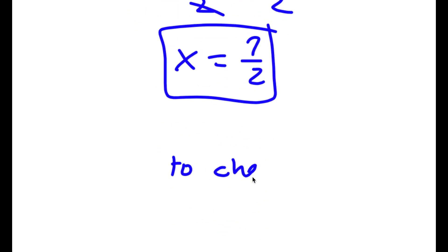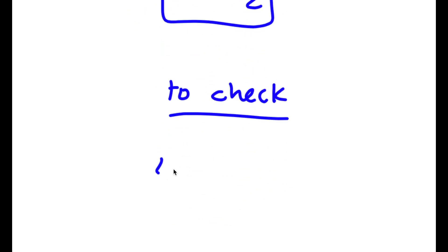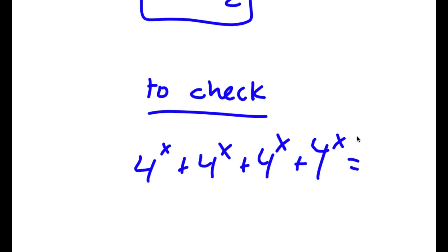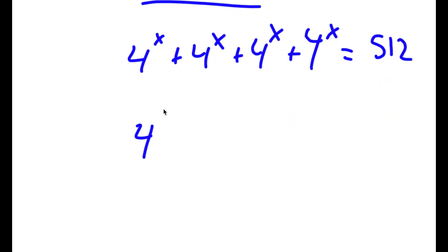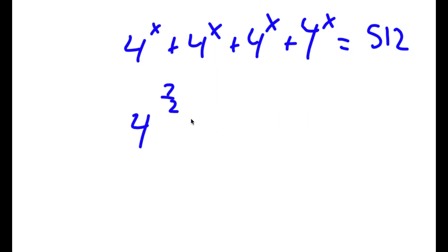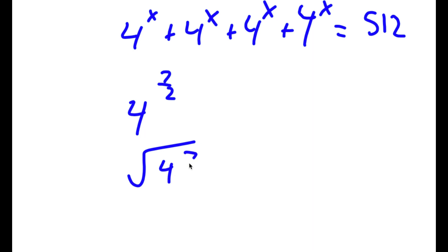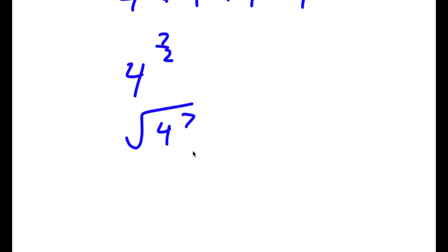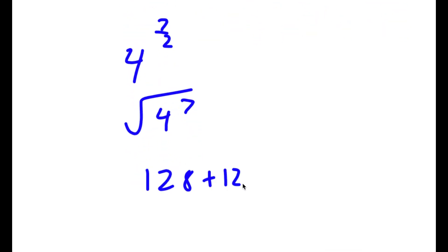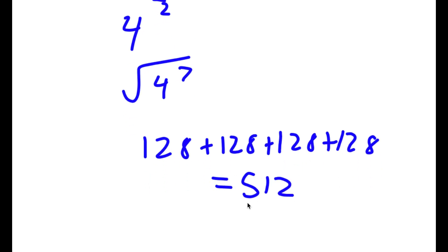To check: 4 to the power of x plus 4 to the power of x plus 4 to the power of x plus 4 to the power of x equals 512. So 4 to the power of 7 over 2 is the square root of 4 to the power of 7. Plugging into a calculator, the square root of 4 to the power of 7 is 128. So 128 plus 128 plus 128 plus 128 equals 512. This is correct.